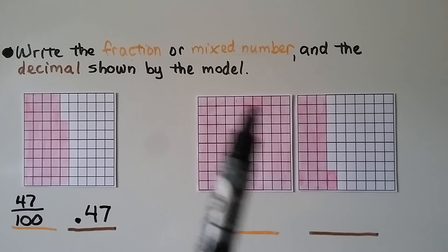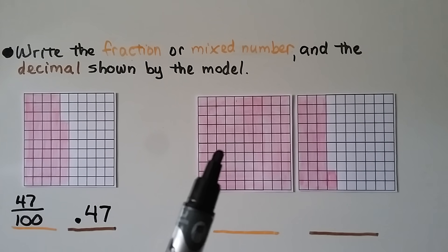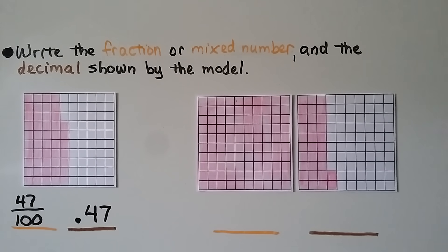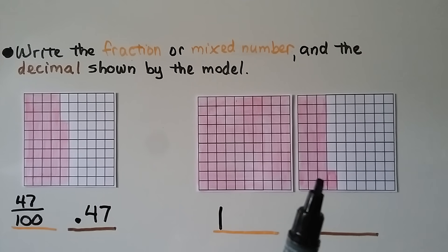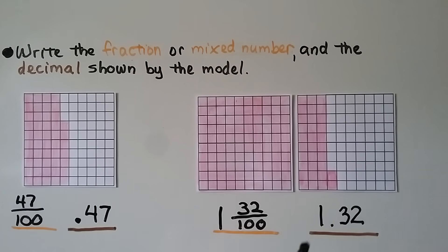Now look at this one — we have one whole filled in, so we know we're going to have a whole number, making this a mixed number. We have 1 whole, and as a fraction we can count — 10, 20, 30, 31, 32 — so 32 of 100 are shaded. Our mixed number is 1 and 32 hundredths. We can write this as a decimal: whole number 1, decimal point, 3 in the tenths place, and 2 in the hundredths place — 1.32, or 1 and 32 hundredths.